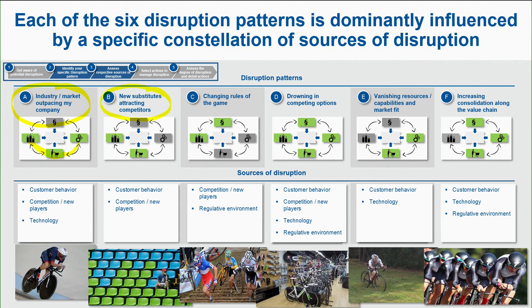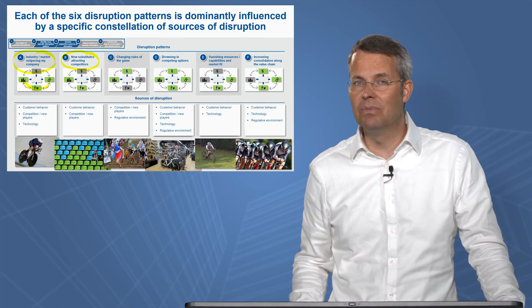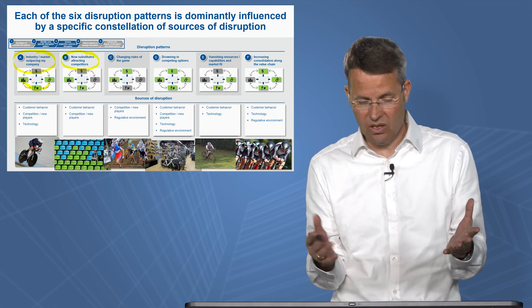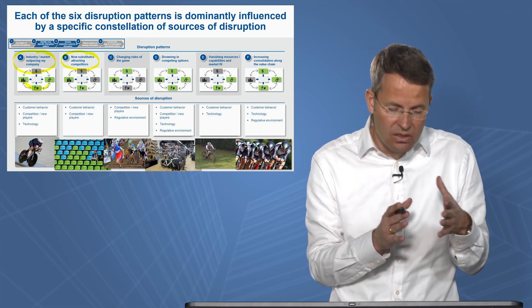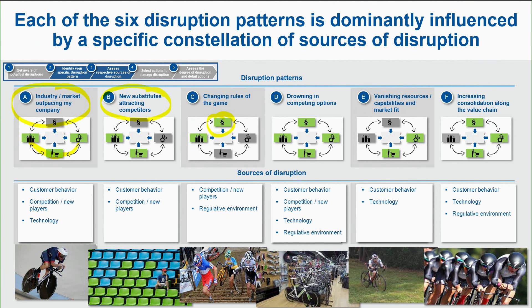In the second pattern — new substitutes attracting competitors — it's market, competitor, and customer behavior that changes and drives that shift, so you need a different reaction. Changing rules of the game starts with deregulation adopted by competitors. Pattern four, drowning in competing options, starts from everywhere — deregulation, new technologies like electric engines, customer demand, and companies like Tesla pushing it forward. Pressure comes from each of the four dimensions.